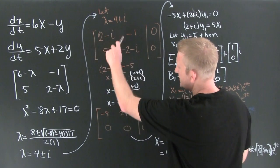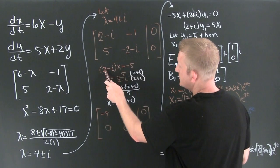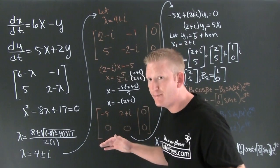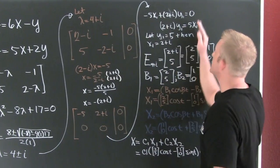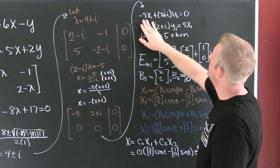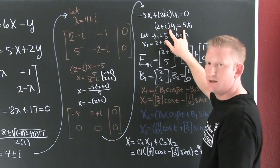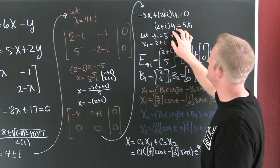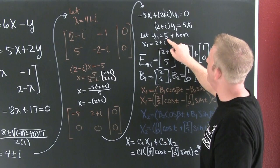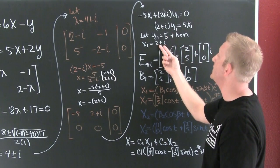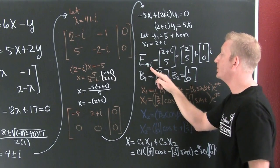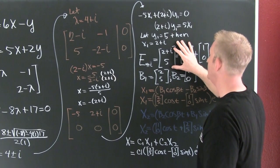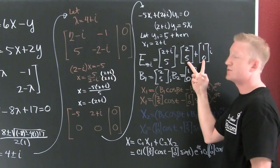I took the liberty of multiplying through: this times 2 minus i gives minus 5, and times minus 1 gives 2i. When I add them, they cancel out. That leaves me with this equation. We have the relationship: 2 plus i times y equals 5x. I make the choice to let y equal 5, because then dividing by 5 leaves me with 2 plus i. So my eigenvector for lambda equal to 4 plus i is going to be [2 plus i, 5]. I break it up into its real and imaginary parts, designating the real part as b1 and the imaginary part as b2.